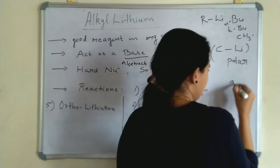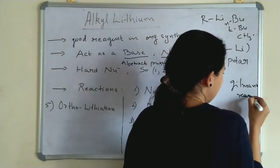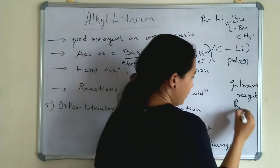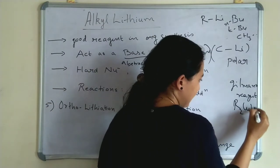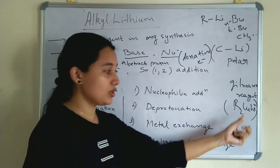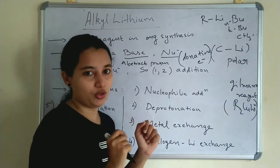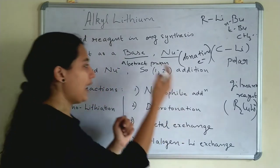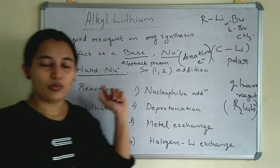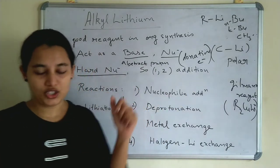In comparison, the Gilman reagent (R₂CuLi) contains copper and lithium. The Gilman reagent is a soft nucleophile, while Alkylithium is a hard nucleophile. Because Alkylithium is a hard nucleophile, it will undergo 1,2-addition.